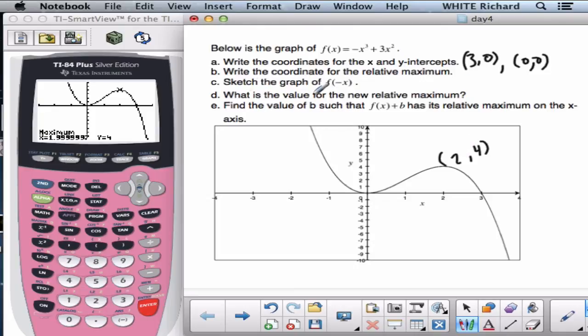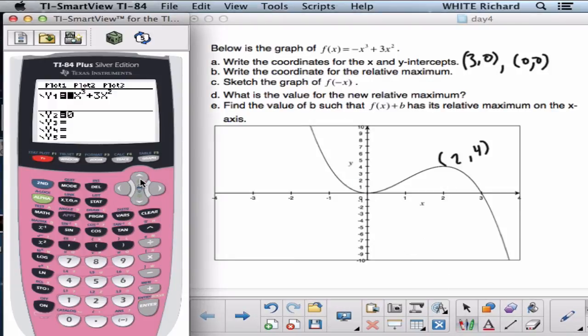Now it says to sketch the graph of f of negative x. So if you were to do that with your calculator, you would go in here. We don't have to do it. We don't need to do it. But we would go in here and go insert. Second insert. Parentheses. Negative. Scroll over. Second insert. Another parenthesis. And go and do that again over with the other x.